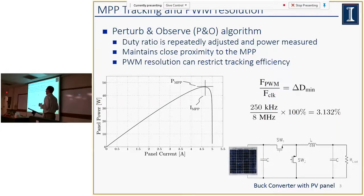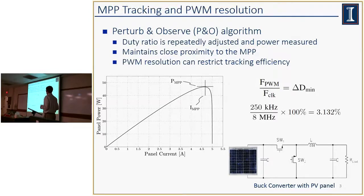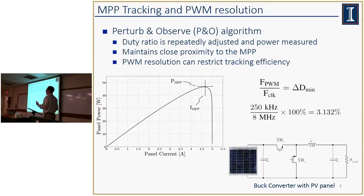This is limited by the clock frequency of our microcontroller in applications where the buck converter is being controlled by a microcontroller. If we're switching at high speed or the microcontroller is running at low speed, we have a fairly coarse control resolution. This causes us to jump back and forth around the maximum power point without being able to focus in and operate there. Perturb and observe is one algorithm to track the maximum power point — the duty ratio is simply adjusted and the change in power evaluated with each adjustment, with the next adjustment either progressing in the same direction or reversing.